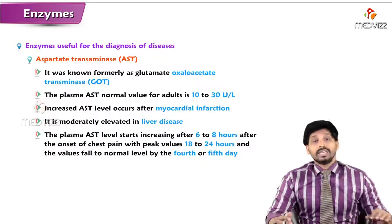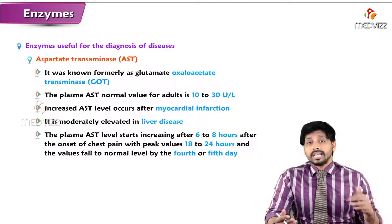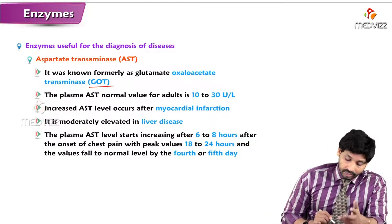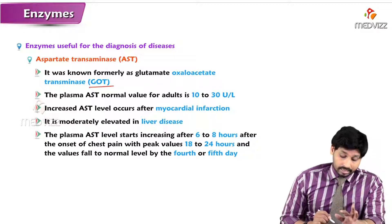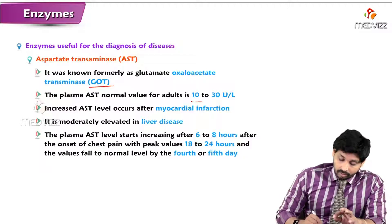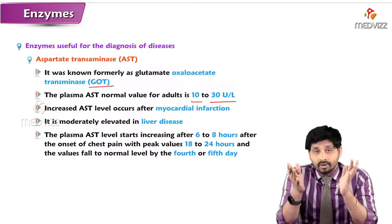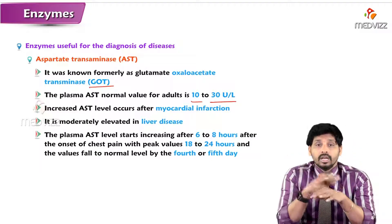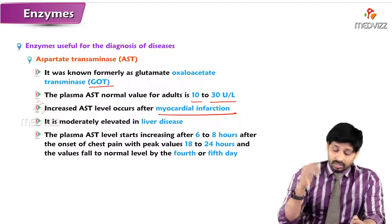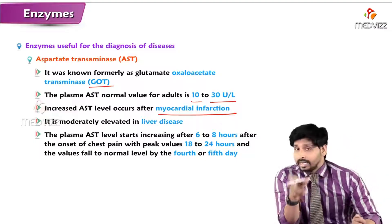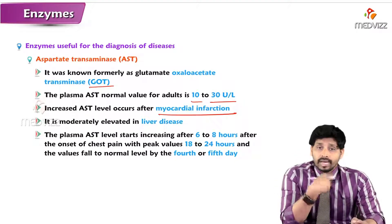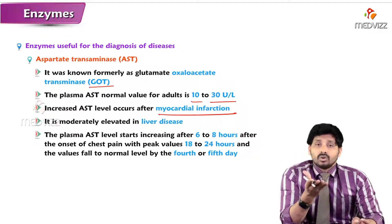The next enzyme is aspartate transaminase (AST), formerly known as glutamate oxaloacetate transaminase (GOT). Its normal level is 10 to 30 units per liter, compared to 10 to 40 for ALT. Increased AST levels occur in myocardial infarction. AST is present in both heart and liver, but at higher concentrations in the heart.